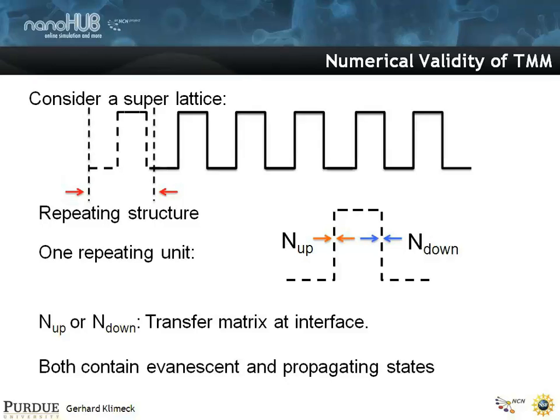The critical thing is that each of these transfer matrices contain evanescent and propagating states. On the left, we have propagating states. On the right of this interface, N_up, we have evanescent states. And for N_down, we have evanescent states on the left, and propagating states on the right.